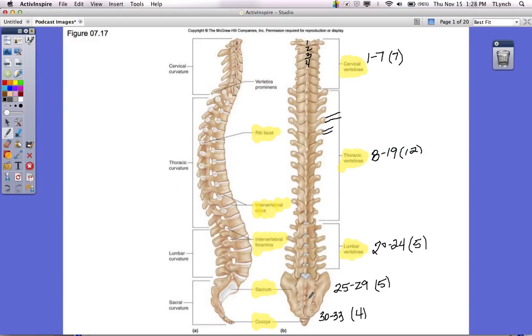So, all in all, you have 33 vertebrae. Twenty-four are not fused, but then you have nine that are.